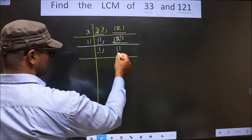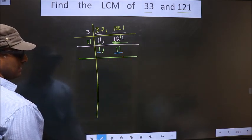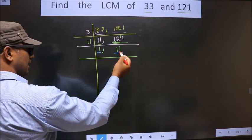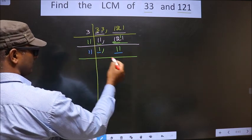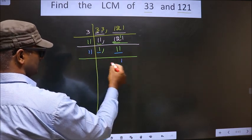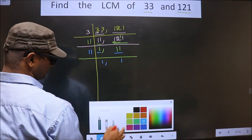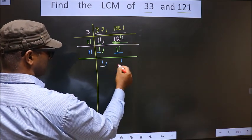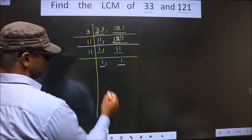We focus on the next number, that is 11. 11 is a prime number, so we take 11 once 11. Now we got 1 in both places.